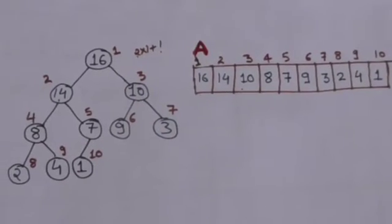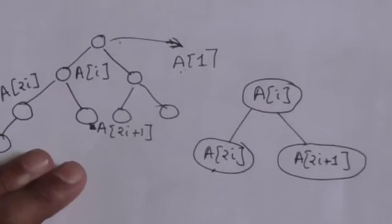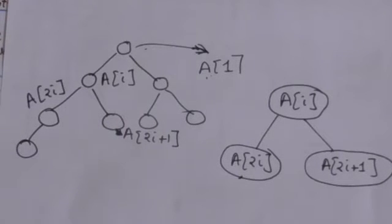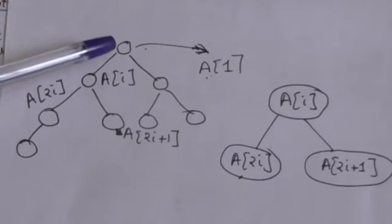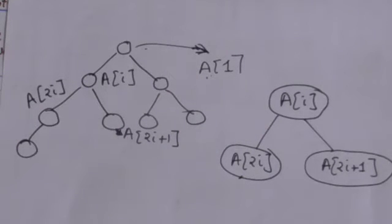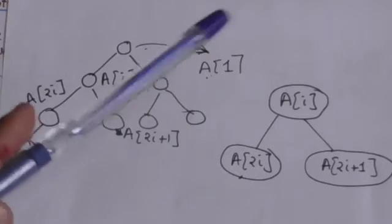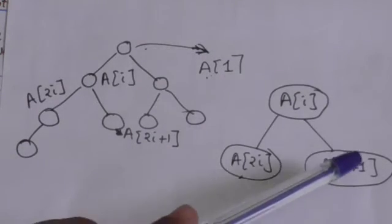The next topic is how heaps are implemented. Heaps are stored in memory as an array. The root of the heap is stored as the first element of the array. Nodes of the heap are stored in the array such that if a node is stored at index i, its left child is stored at index 2i and its right child is stored at index 2i+1.